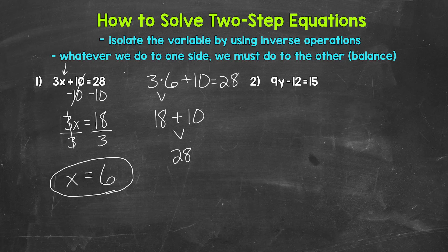Let's move on to number two, where we have 9y minus 12 equals 15. So 9 times what minus 12 equals 15. We need to isolate that variable y — we need to undo the operations on that side of the equation. We have multiplication and subtraction, so we need to go in reverse order of operations. We need to undo the subtraction first. What's the inverse operation of subtraction? Well, addition. So let's add 12 to the left side of the equation.